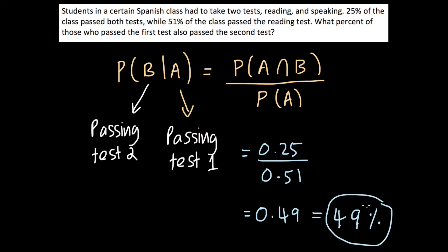So this is the percentage of those who passed the second test, given that they had already passed the first test. So that is conditional probability. I hope that was helpful. And thank you for watching.